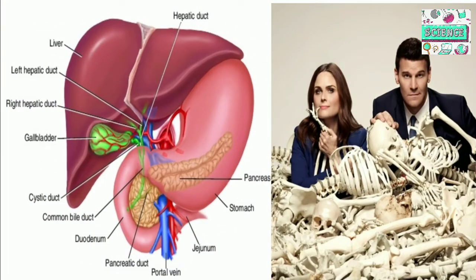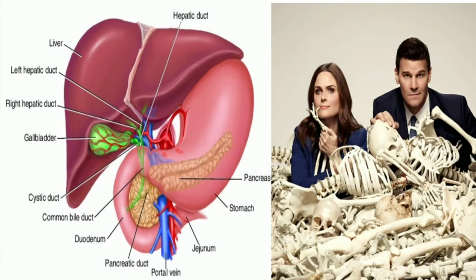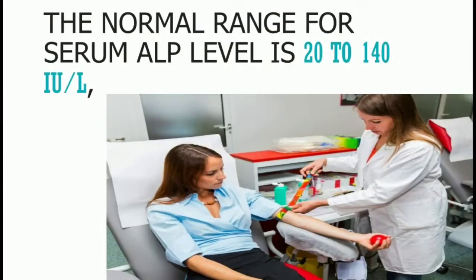Abnormal levels may also indicate problems with your gallbladder or bones. However, they may also indicate malnutrition, kidney cancer, tumors, intestinal issues, pancreas problems, or a serious infection. The normal range of alkaline phosphatase varies from person to person and depends on your age, blood type, gender.